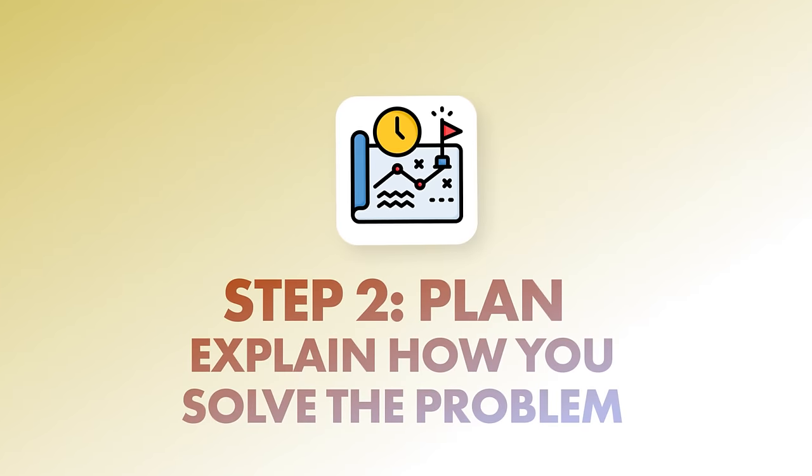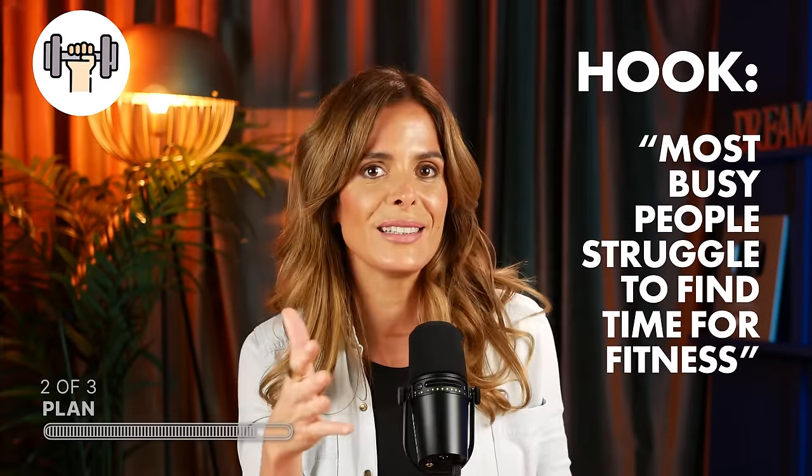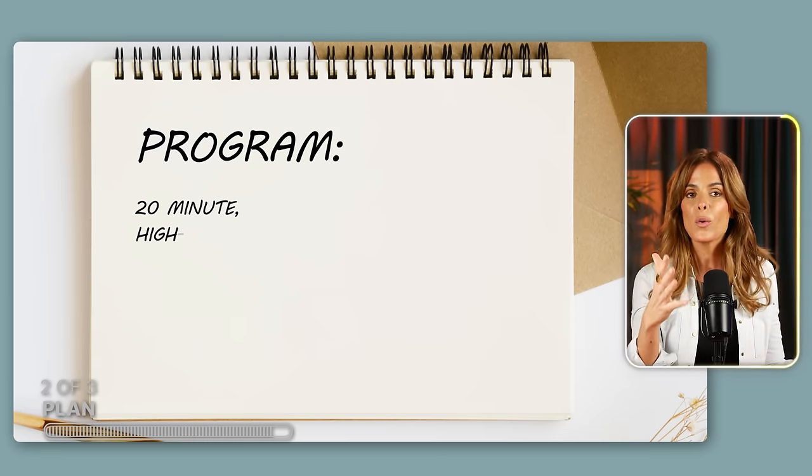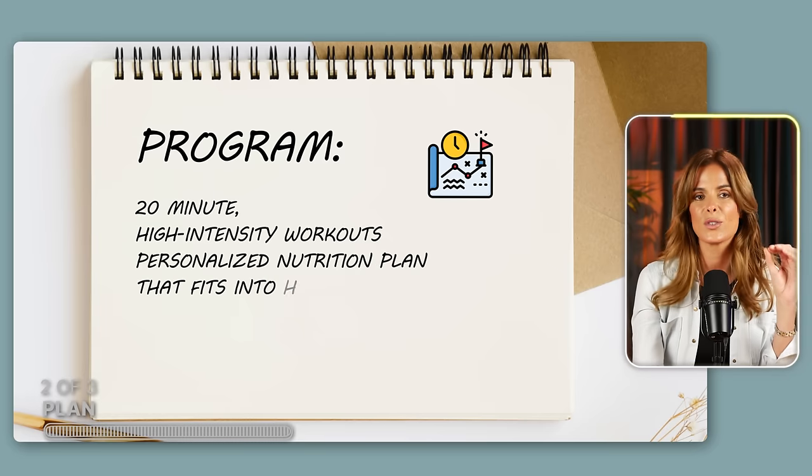Step two: Plan. Explain how you solve the problem — your method, your system, your plan. Instead of going into all the technicalities of your product, you focus on how you solve the problem. Avoid being too abstract like 'we help you improve,' but also avoid overcomplicating the explanation, because when you confuse a client you most likely lose them. So let's say you're a fitness instructor and your course is for busy professionals who struggle finding time to work out. Your opening hook is: most busy people struggle to find time to work out. And your plan is: my program includes 20-minute high-intensity workouts and a personalized nutritional plan that fits into hectic schedules.